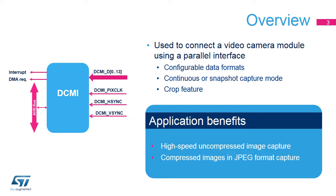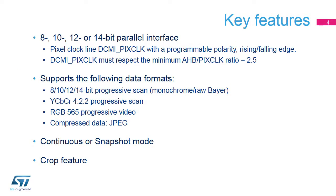With the crop feature, the camera interface can cut and store a rectangular portion of the received image. The camera interface has a configurable parallel data interface from 0 to 14 data lines, together with a pixel clock line, DCMI PIX clock, with a programmable polarity and rising-falling edge configuration.